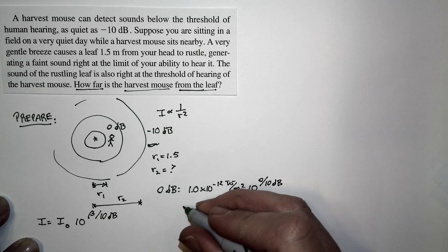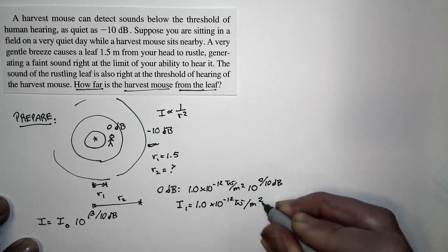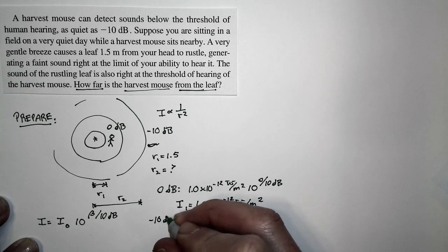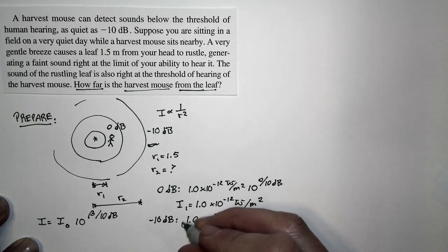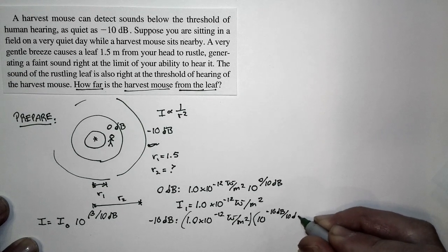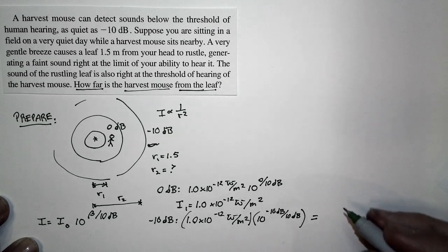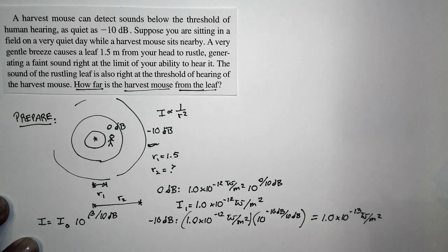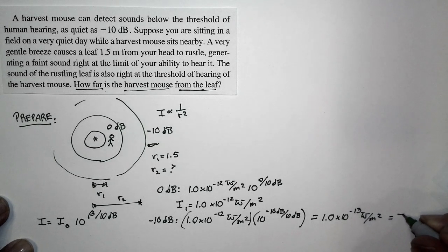10 to the 0 is just 1, so the intensity that you can hear, I1, is just equal to 1.0×10⁻¹² watts per square meter — but you know that, that's the smallest intensity you can hear. How about negative 10 decibels? That's 1.0×10⁻¹² watts per square meter times 10 to the negative 10 over 10, which gives us 10 to the negative 1. 10⁻¹ times 10⁻¹² is 10⁻¹³, so the intensity the mouse can hear is I2 = 1.0×10⁻¹³ watts per square meter — less than what you are sensitive to.